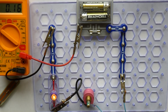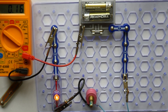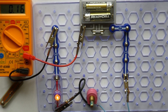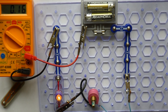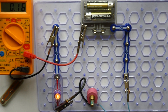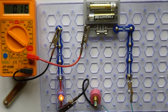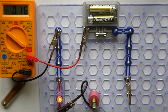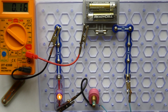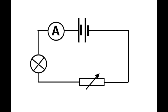Demonstrating this circuit: it is a simple circuit with an ammeter, a single bulb, and a variable resistor. The circuit diagram uses the standard circuit symbols — a circle with a cross being the bulb, and the